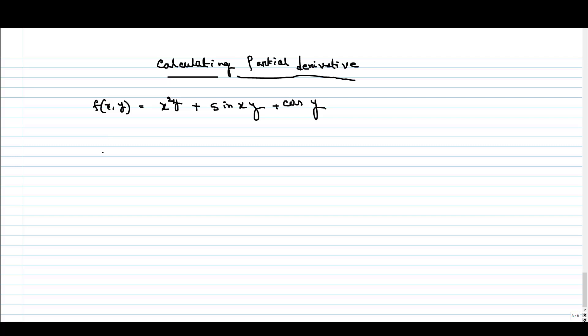When we are calculating the partial derivative with respect to x, that is we are calculating fx of xy, we will consider y to be the constant. For the first term, if y is constant, we will only take the derivative with respect to x. So it is 2xy.